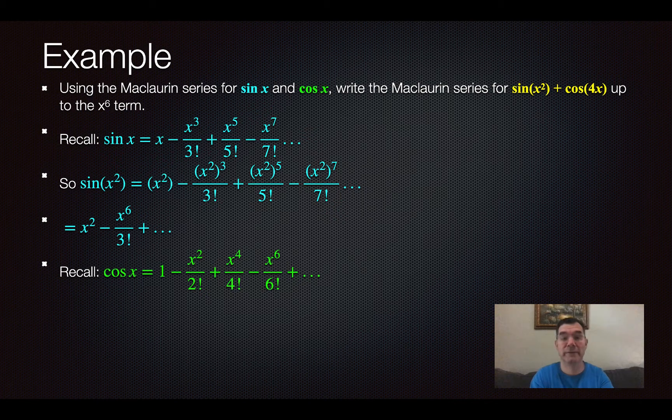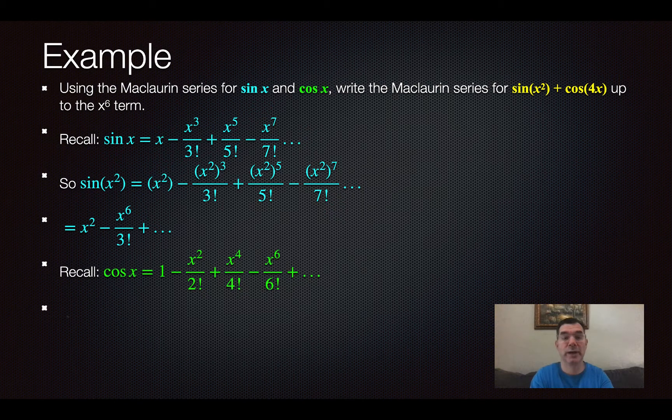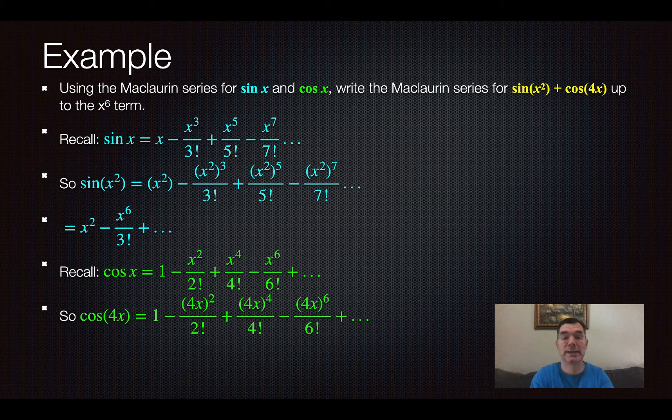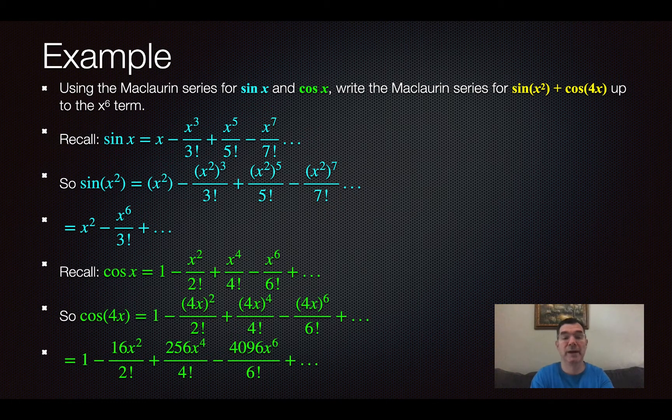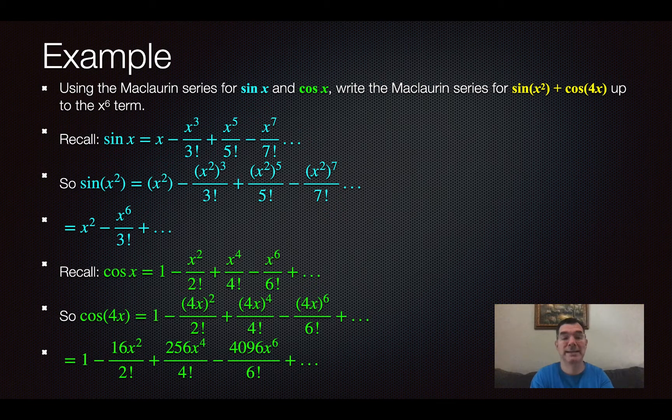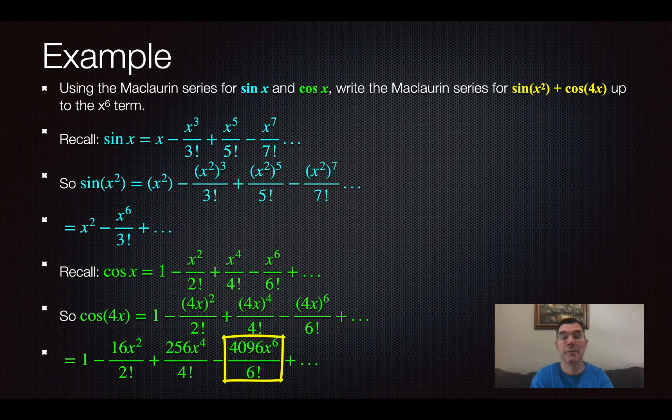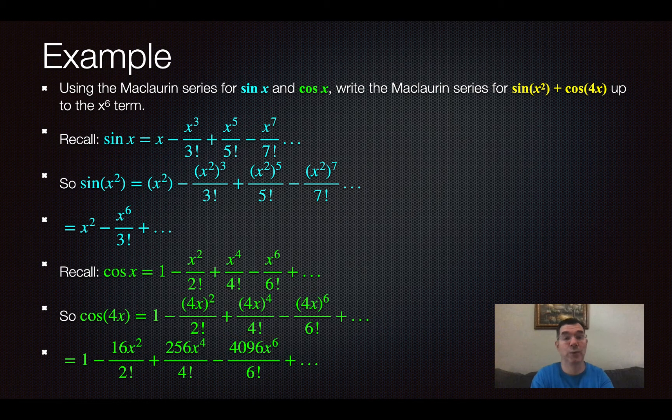Turning our attention to the cosine function now, that is the Maclaurin series for cosine x. And so now I need to change that so that it is cosine 4x instead. So the same process, I'm taking that Maclaurin series for cosine x and everywhere there's an x, I'm replacing it with a 4x. So that's what it looks like when I do that. And when I simplify, it's going to be 1 minus 16x squared over 2 factorial and so on. And notice again, I'm stopping at the x to the 6 term because that's the highest exponent that I was asked for.